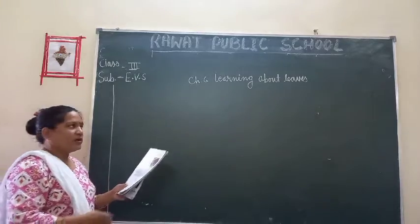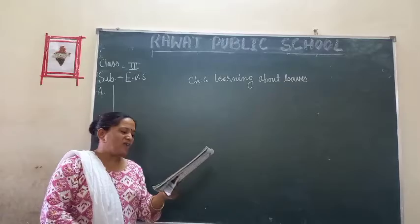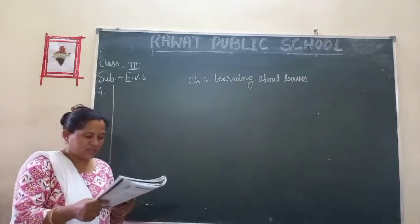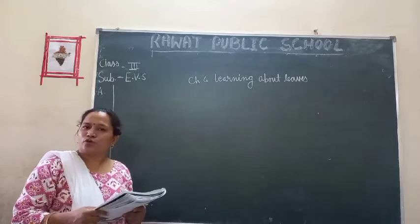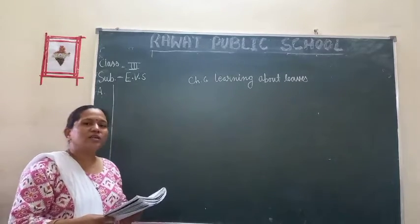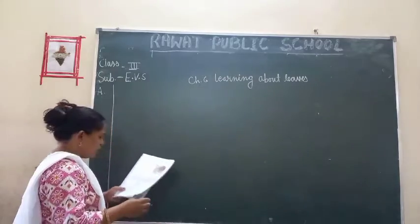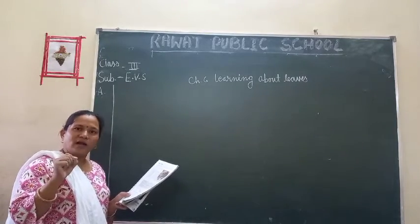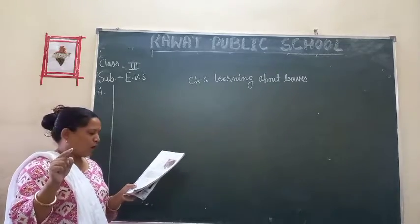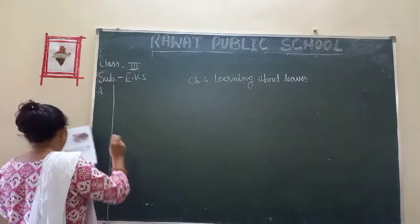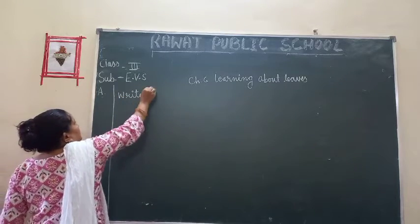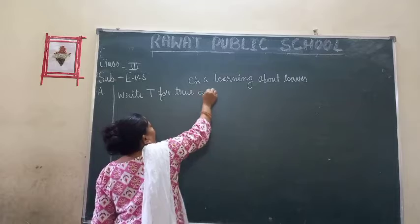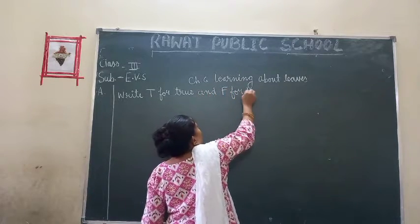So today we are going to start the exercise. Number 1, first exercise is A. In this exercise you have to write T for True and F for False. Five statements are given in this exercise. If the statement is right, you write T for True. If the statement is false, you write F. In your notebook you have to write the heading: T for True and F for False.